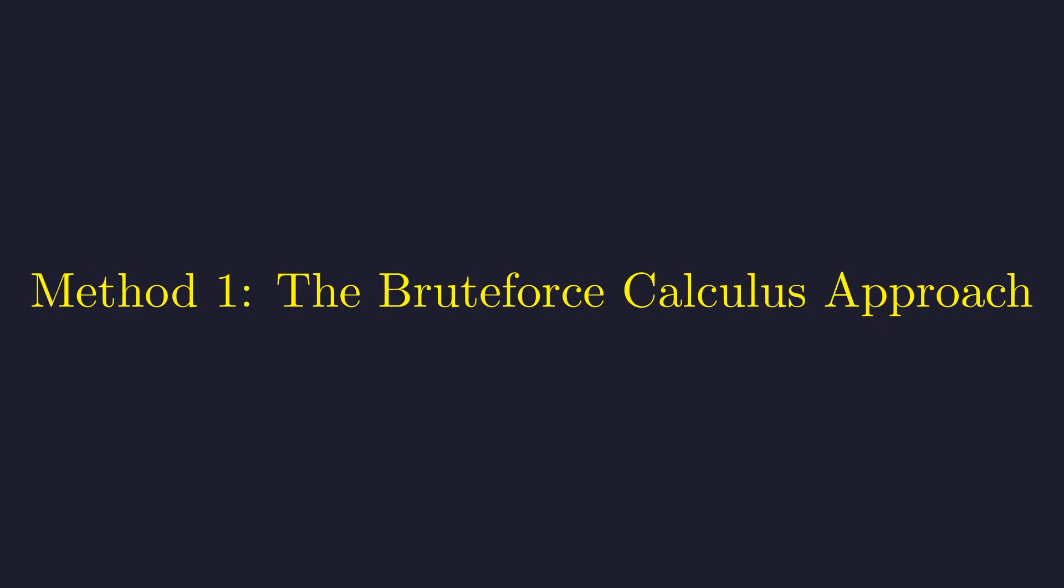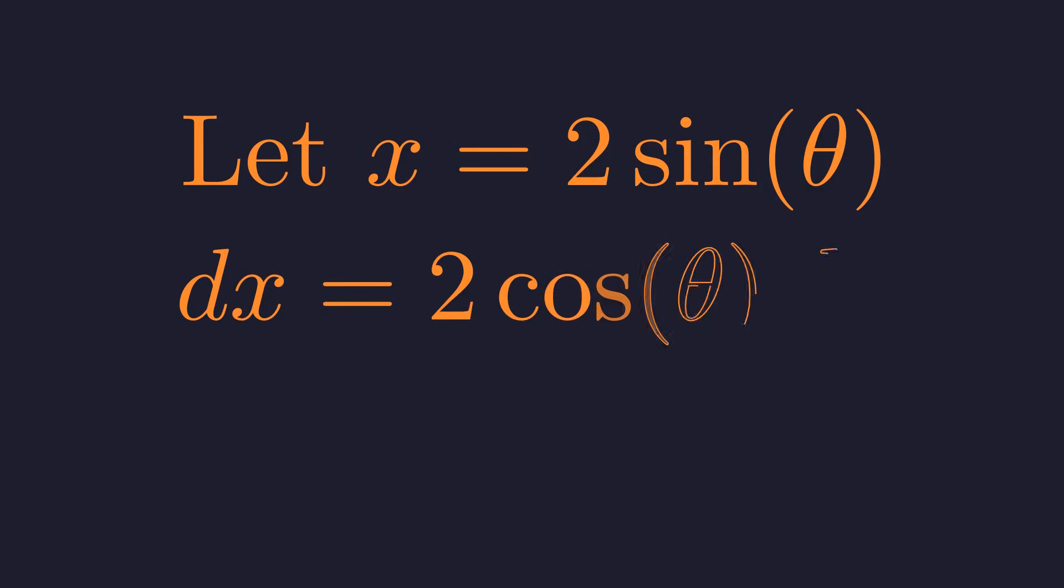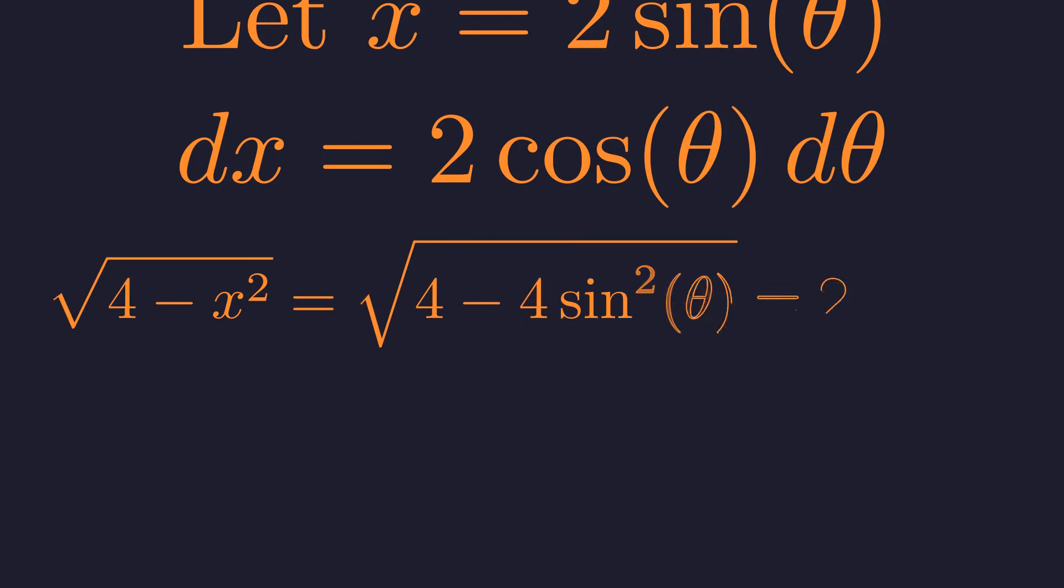Now, the standard calculus textbook approach would be to use a trigonometric substitution. Let's see what that looks like. You'd substitute x with two times the sine of theta. The differential dx becomes two cosine theta d theta. The radical simplifies to two cosine theta.